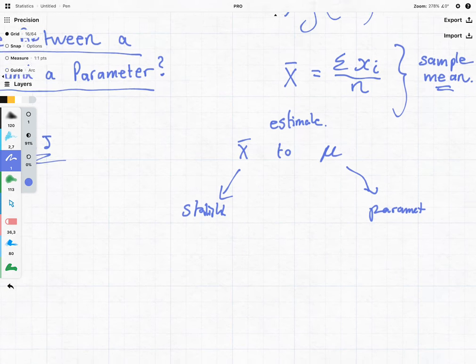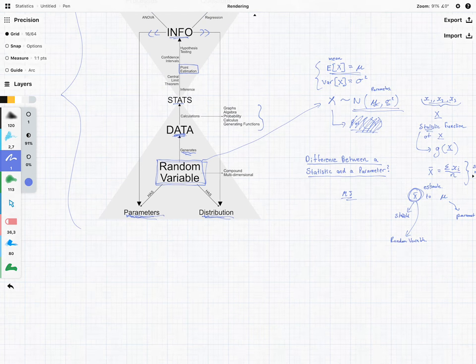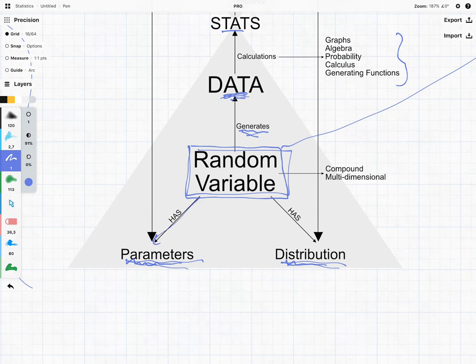Where things start to get interesting is that this statistic over here, because it's made up of a random sample, it is in its own right, a random variable. And because it is a random variable, we know from our big picture, that it too is going to have its own set of parameters and its own set of distributions.